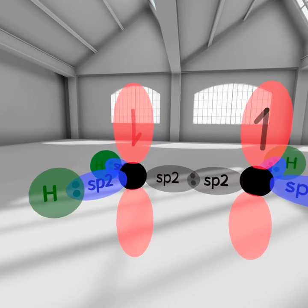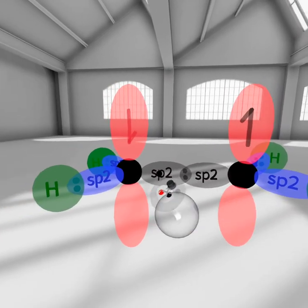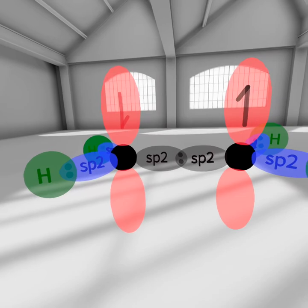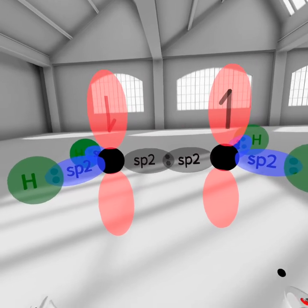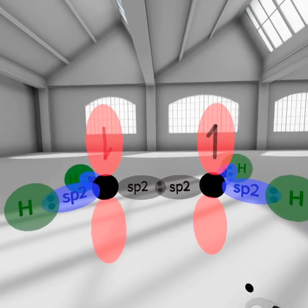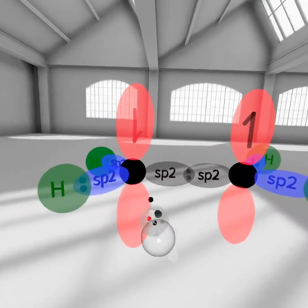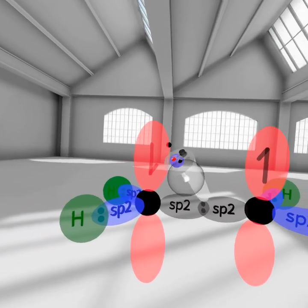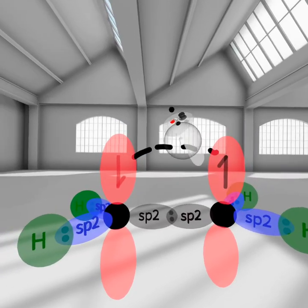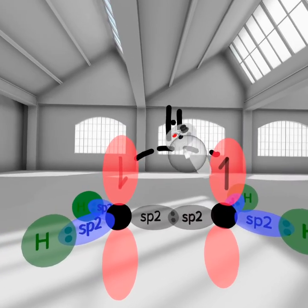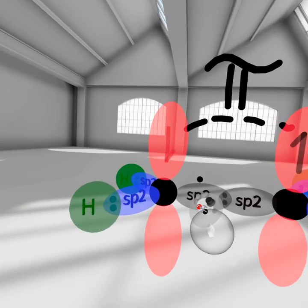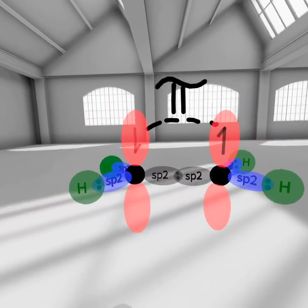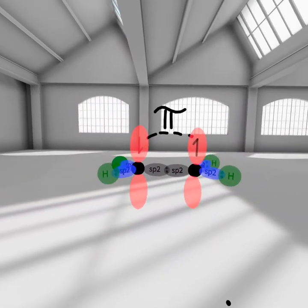Now 90 degrees from that is the p orbital of each carbon atom. Remember, when something is sp2, you can also call that sp2 plus p, to remember that there is an unhybridized p orbital on each of those carbon atoms. This is what forms the pi bond. Those p orbitals are 90 degrees from all of these bonds.